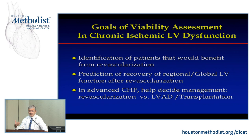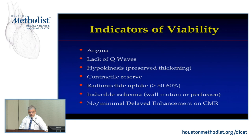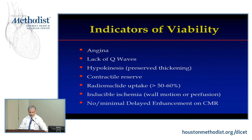The most important goal is not simply whether the heart shows reverse remodeling after revascularization — for stable patients, most would just look for ischemia. Key indicators of viability include: true angina, lack of Q waves, hypokinesis rather than akinesis, contractile reserve assessed with dobutamine, radionuclide uptake, and inducible ischemia — because inducing ischemia can reveal recovery of function. Lastly, minimal delayed gadolinium enhancement on CMR indicates viability.